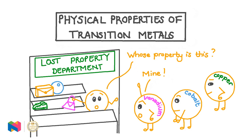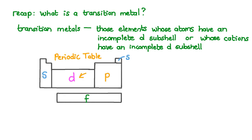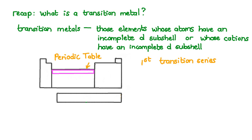In this video we will learn about the physical properties of the transition metals, specifically the first row of the transition metals. Transition metals are those elements whose atoms have an incomplete D subshell or whose cations have an incomplete D subshell. They are located in the D block of the periodic table and the inner transition elements are located in the F block. We will only study the first row of the main transition metals. This row is called the first transition series and it is in period 4.